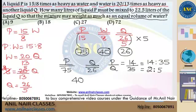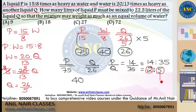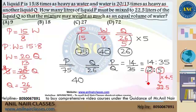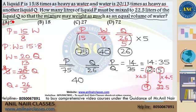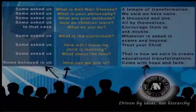The question asks: how many liters of liquid P must be mixed with 22.5 liters of liquid Q? According to the ratio, 2 liters of P is mixed with 5 liters of Q. But the question says Q should be 22.5 liters. So multiply 5 by 4.5 to get 22.5, and also multiply 2 by 4.5. The answer is 9 liters of liquid P. This demonstrates how a difficult question can be solved in the easiest way using the alligation method.